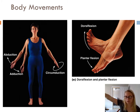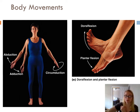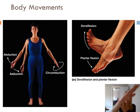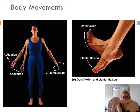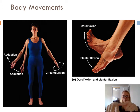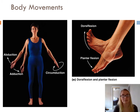Circumduction is like pretending you're drawing a big imaginary circle in the sky — so this would be circumduction at my wrist or my shoulder. I can do circumduction at my wrist and at the metacarpophalangeal joint here. So circumduction at three different joints.